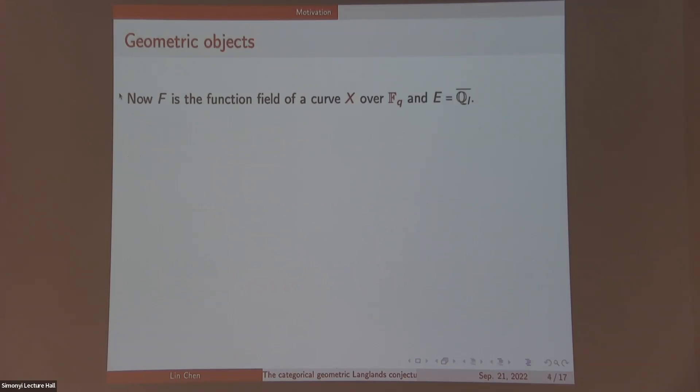To talk about geometric things, let's now let F be a function field of a curve X, a smooth projective connected curve over F_q, and this coefficient field E be Q-bar. Let's start from looking at the Galois side. Now the set of Galois representations, more or less you can identify it with the set of G-check local systems on X, because the fundamental group of X is just the absolute Galois group of F.